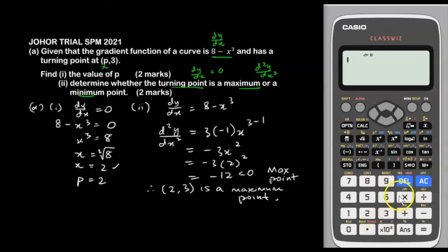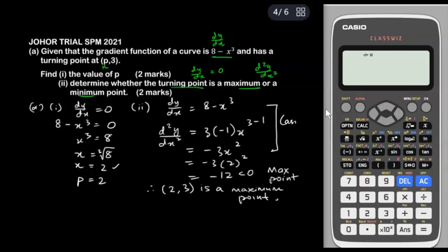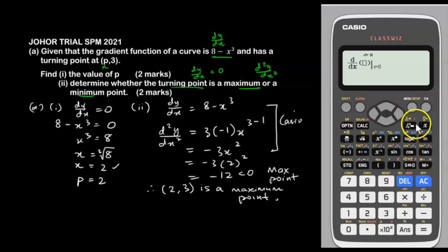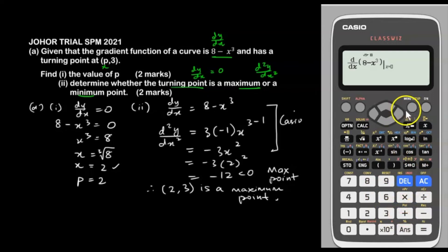To double-check using the Casio Classwiz calculator: press Shift, then the d/dx button, and key in 8 minus X cubed. Set X equals 2, press equals, and you get -12. This confirms the second derivative is correct, and since it's negative, it's a maximum point.